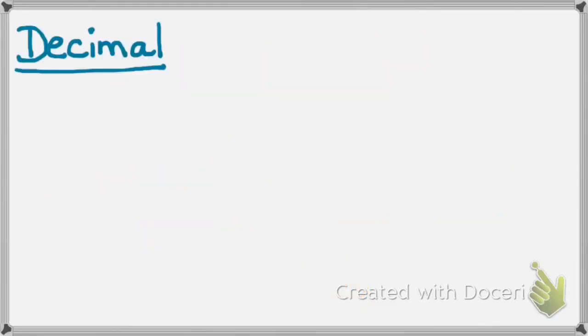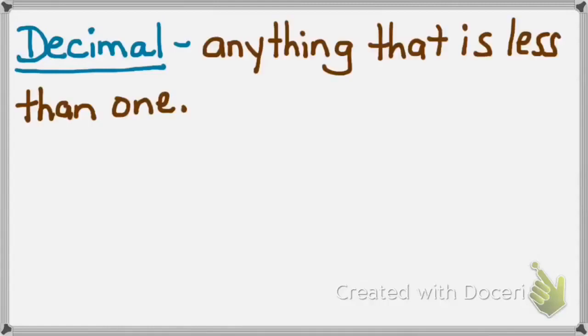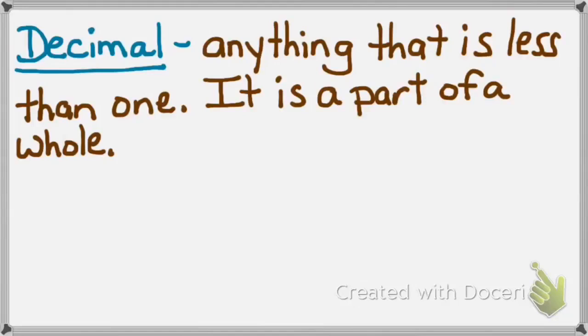Our first vocabulary word is decimal. A decimal is anything that is less than one. It is a part of a whole, not a whole.